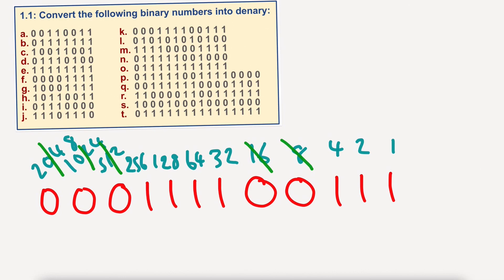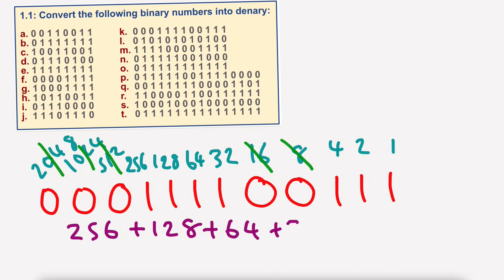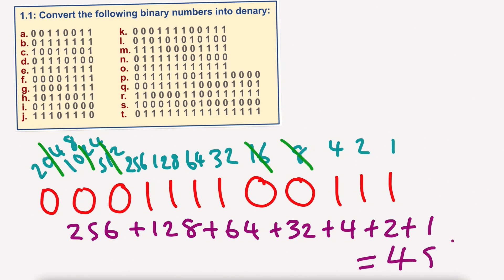Adding these together we have 256 plus 128 plus 64 plus 32 plus 4 plus 2 plus 1, giving us 487 as our answer. Of course we cannot use the calculator in the exam, but not to worry. Let's just rub that one out again.